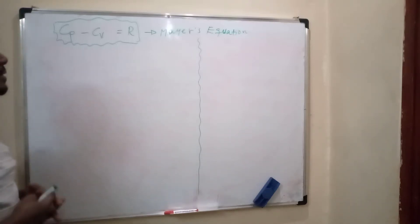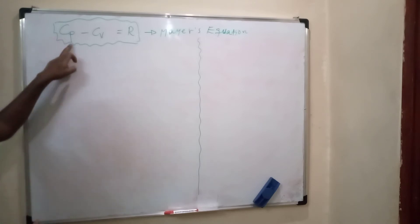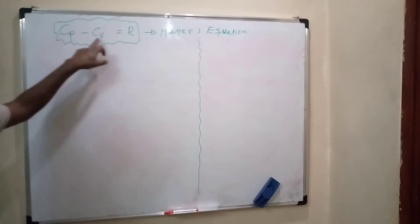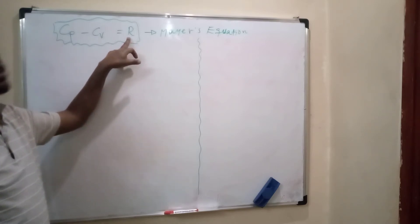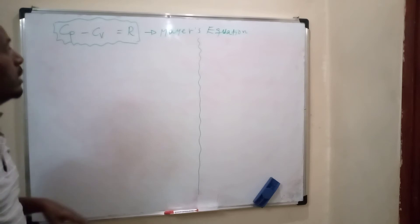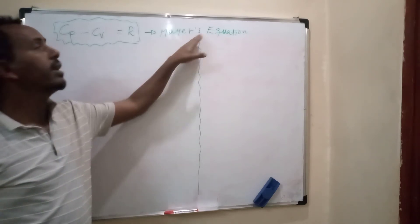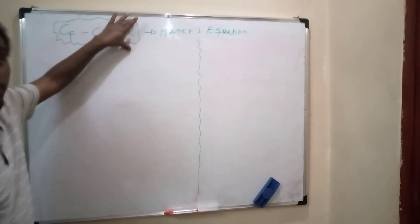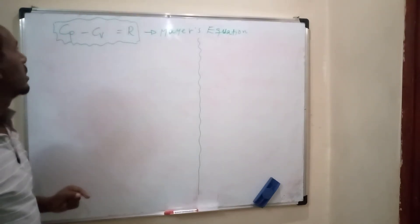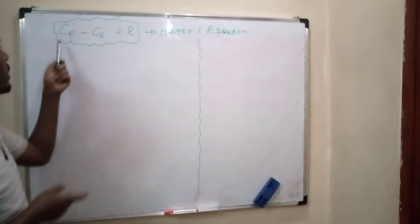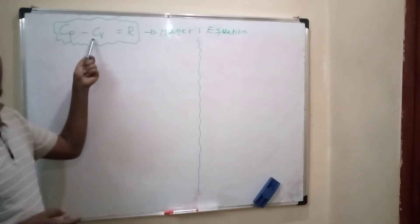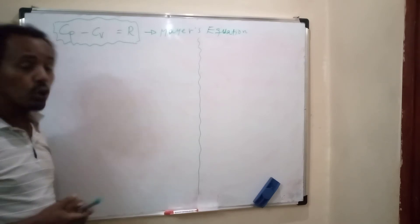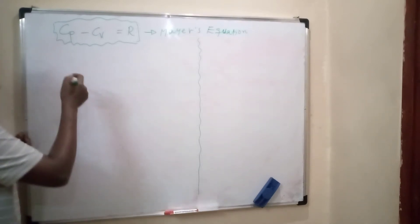In this video we will see about molar heat capacity at constant pressure minus molar heat capacity at constant volume equals to the ideal gas constant, symbolized by R. This equation is known as Mayer's equation. Let's prove how Cp minus Cv equals R.